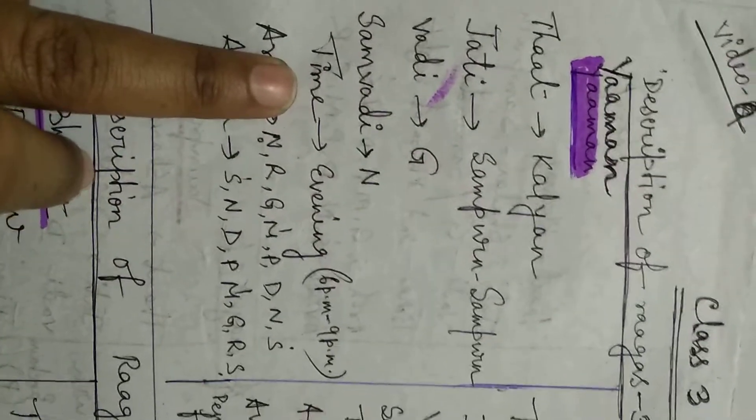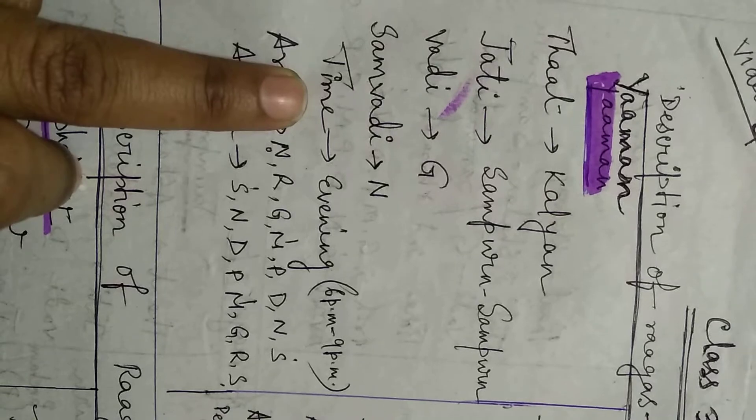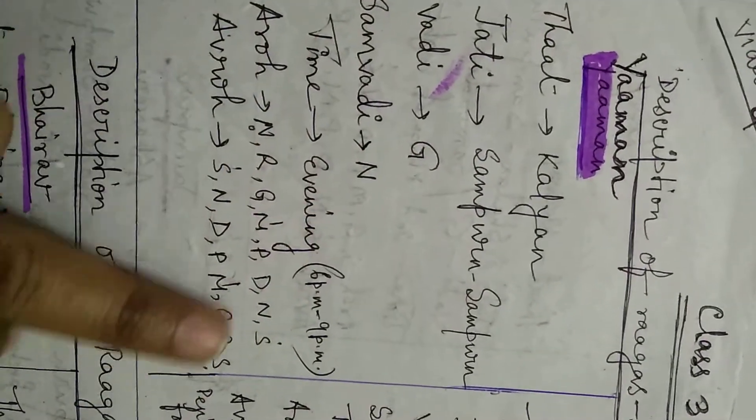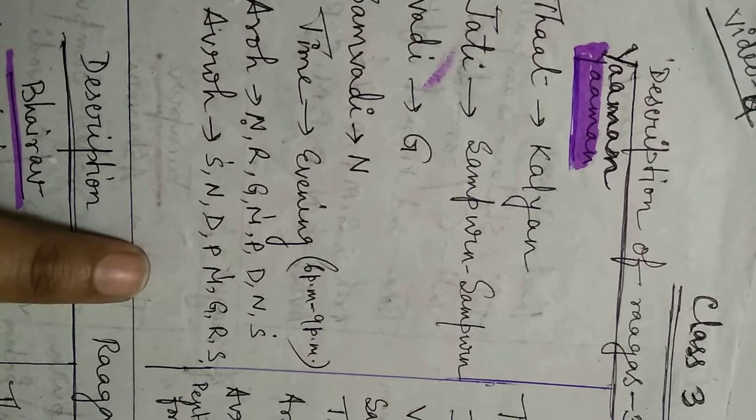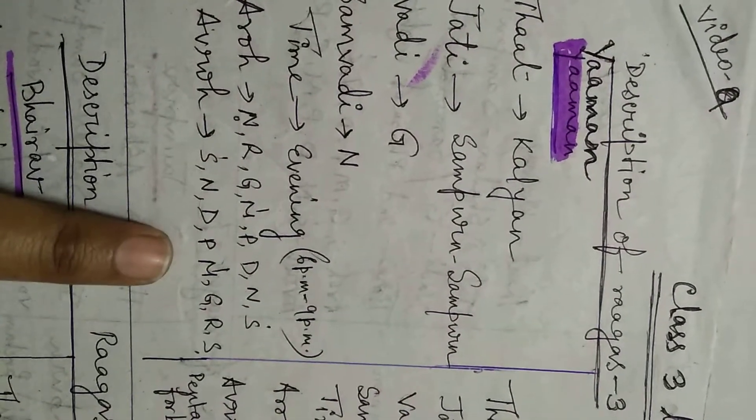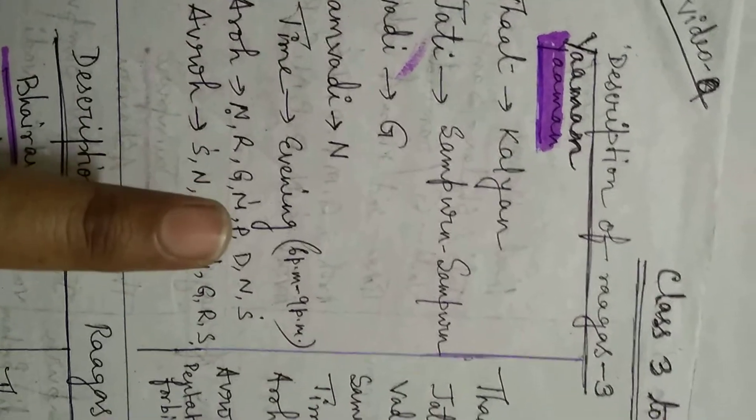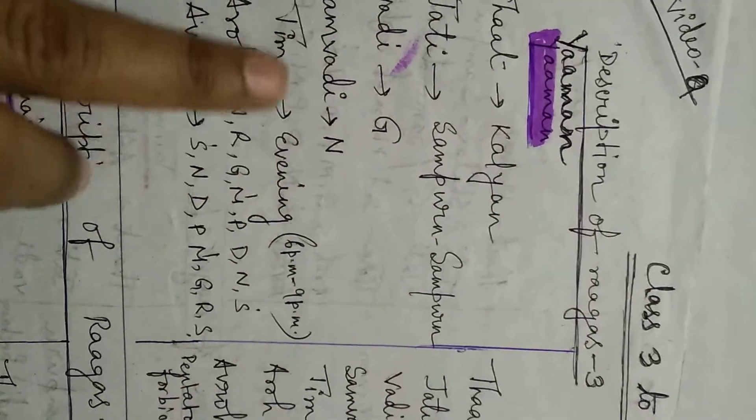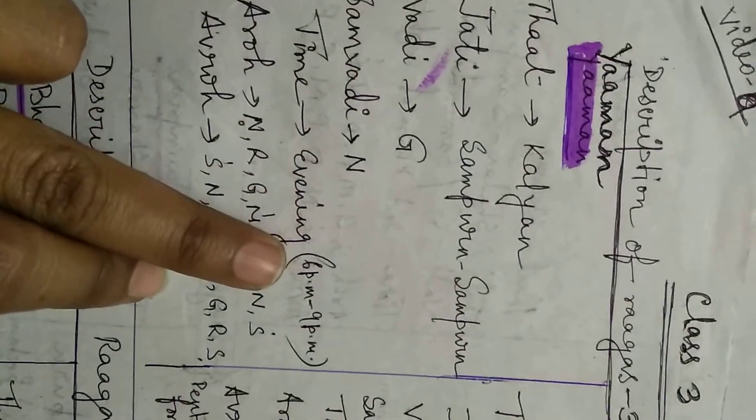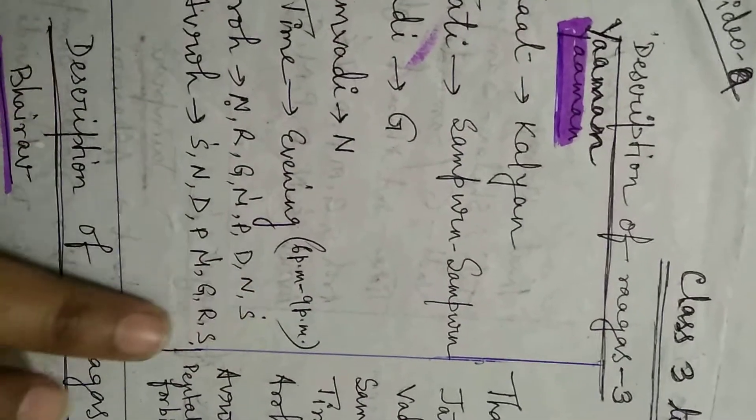And every rag has got a particular time of singing because of its swaras, the arrangement of swaras. The mood of these swaras particularizes or fixes up the time for this rag. So for rag yaman, the time is evening, means 6 pm to 9 pm.